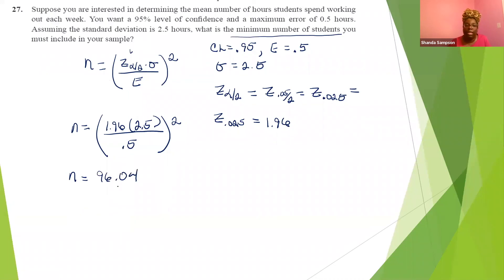But remember you can't get 96.04 students. So n is going to equal 97, not 96, 97. Why 97? Because regardless of what's back here, you have to go up to the next number so that you can include enough students. If you say 96, you didn't include all of your students. So you have to go up to 97. So that answer is 97.